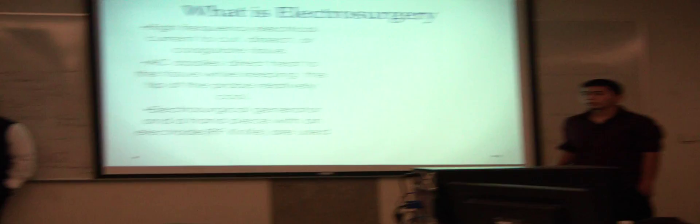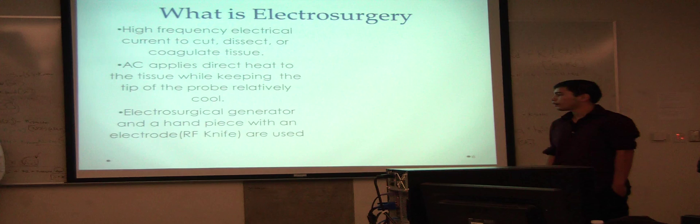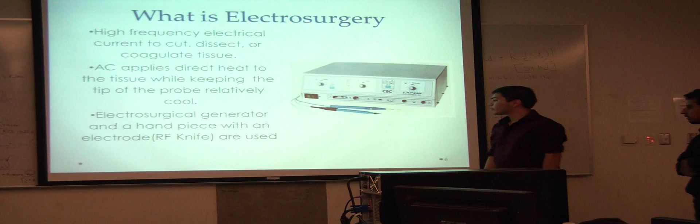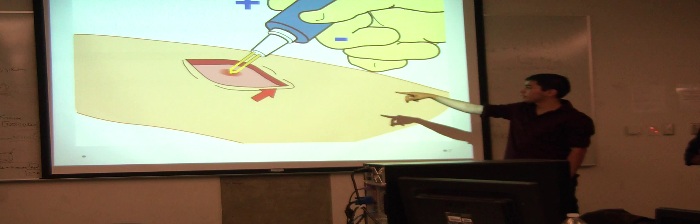The current comes from the generator with a hot knife. This is an animation of how it works. It's an electrical current in the form of electrons that goes from the positive side of the electrode into the skin and back into the electrode, and it creates an electrical current.